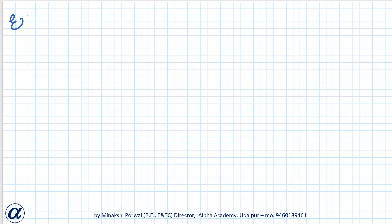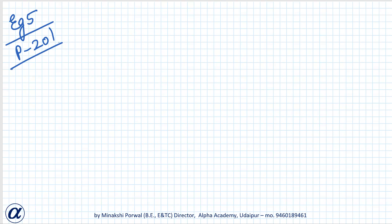Okay, so let us start Example 5, page number 201 — some applications of trigonometry. The shadow of a tower standing on a level ground is found to be 40 meters longer when the sun's altitude is 30 degrees than when it is at 60 degrees. So basically there is a tower.